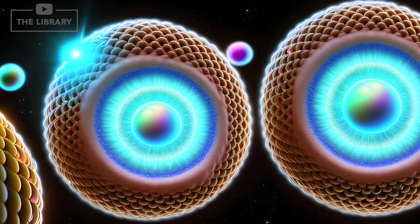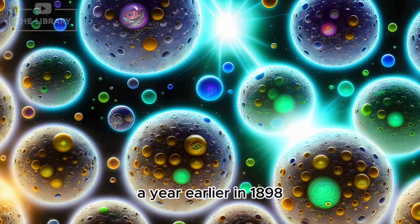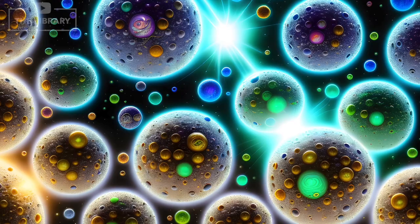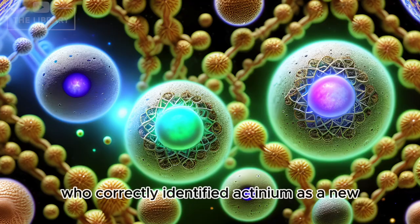Fascinatingly, Giesel wasn't the first scientist to have stumbled upon actinium. A year earlier, in 1898, another renowned chemist, Friedrich Ernst Dorn, had also discovered the element, but he had not recognized it as a new element. Thus, the credit for the discovery goes to Giesel, who correctly identified actinium as a new, distinct element.